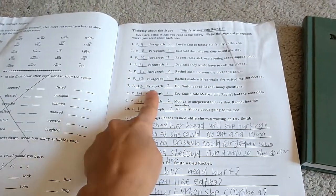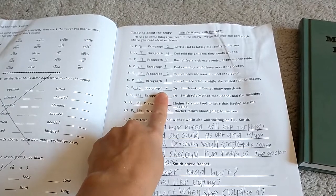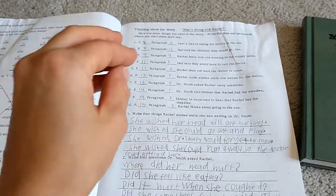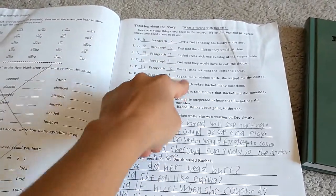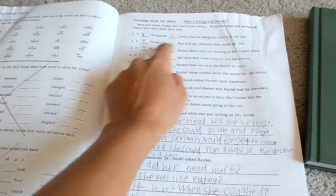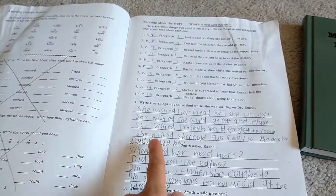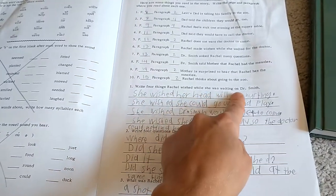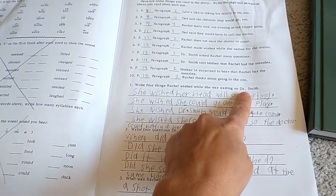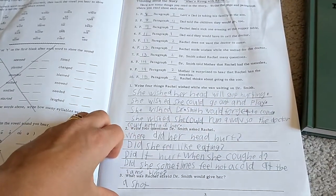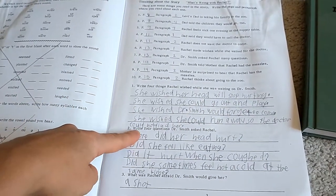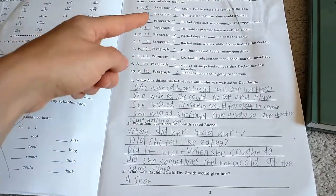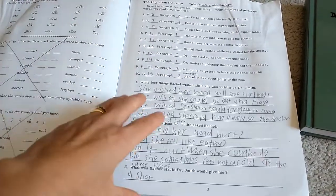That's just great practice of actually going back in the book and looking for your answers. She told me what to write for this—I would read her this and I would write it and she would tell me what to write, and then she answered these on her own. So, write four things Rachel wished while she was waiting on Dr. Smith. She's going back in the book if she doesn't remember and she's using this skill she just learned to look that up.